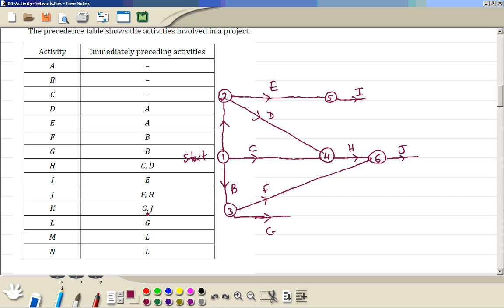K going to be G, J. You also need G for L as well. So if we call this event 7, then G finishes, then we can take a dummy to J. So that's joined together, event number 8 for K.